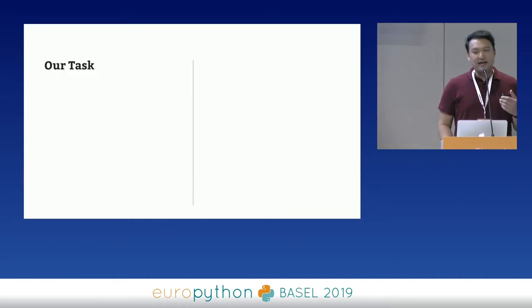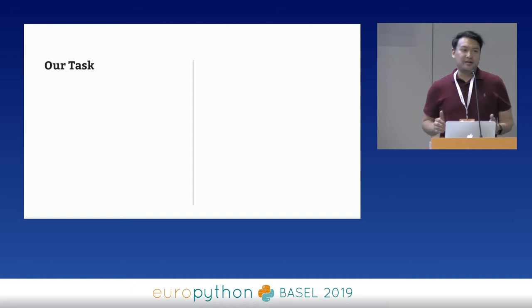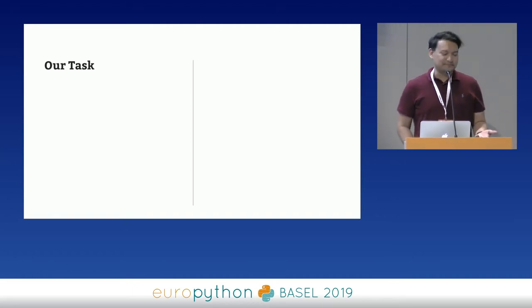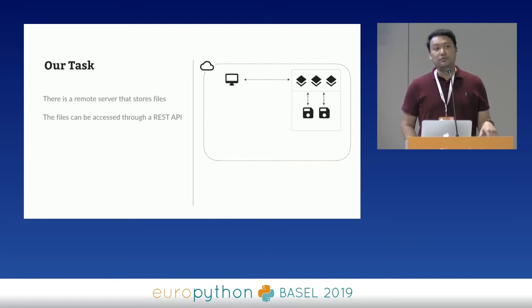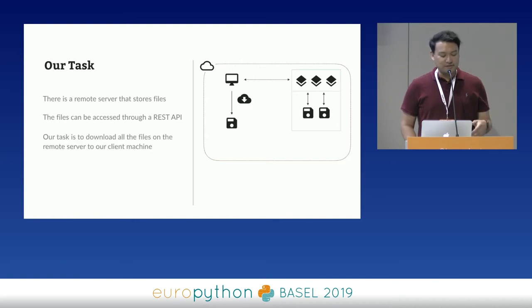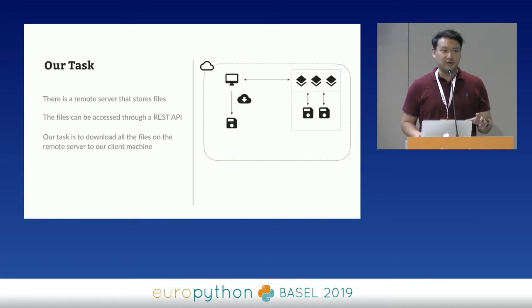This is really a case study in trying to figure out whether we should be using multi-threading, multi-processing, or async I/O. To help motivate this, let's say we've been given a task: there is a remote server that stores files, and these files can be accessed through a REST API. Our task is to download all of the files from this remote server onto the client machine running our code.